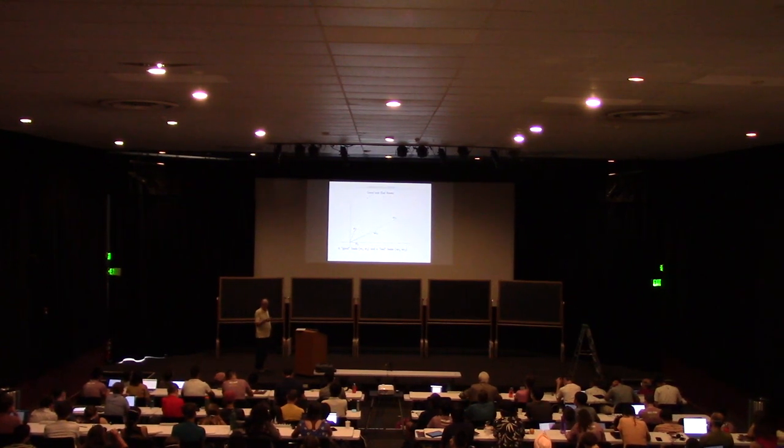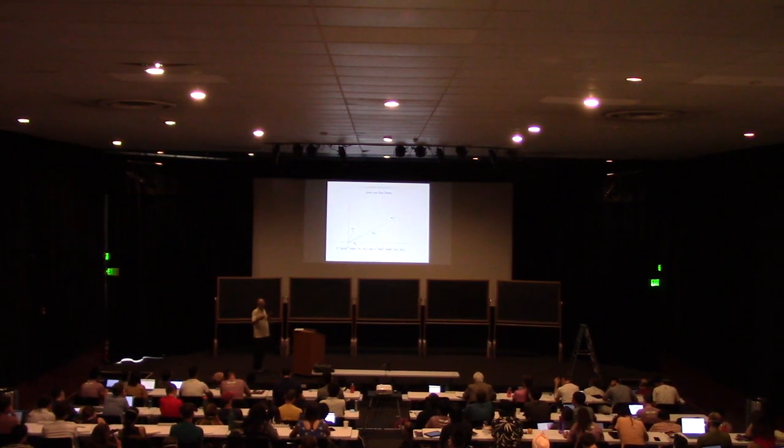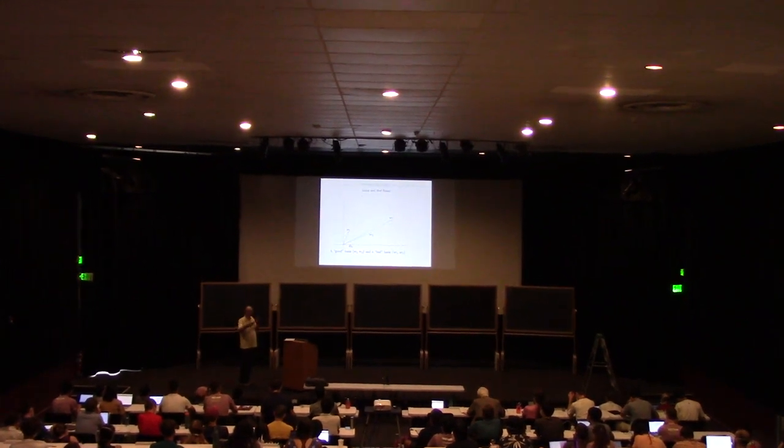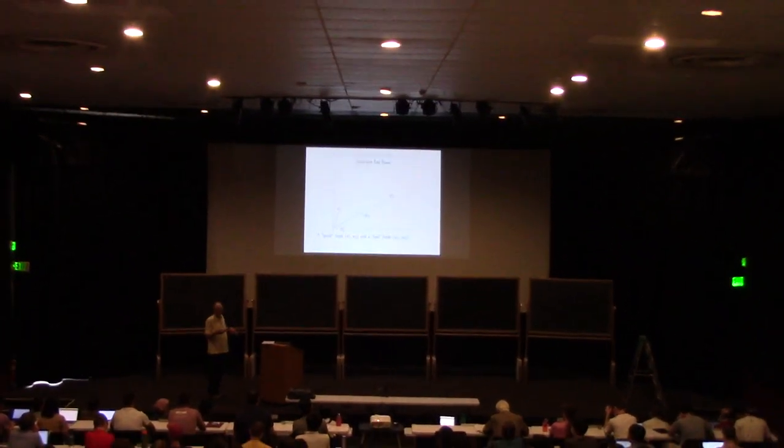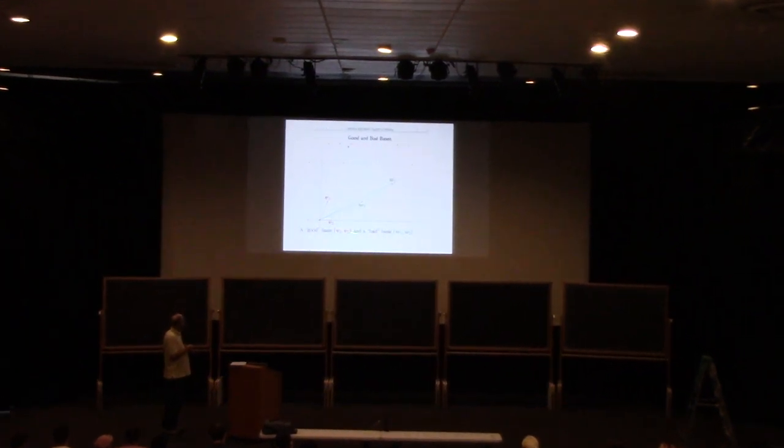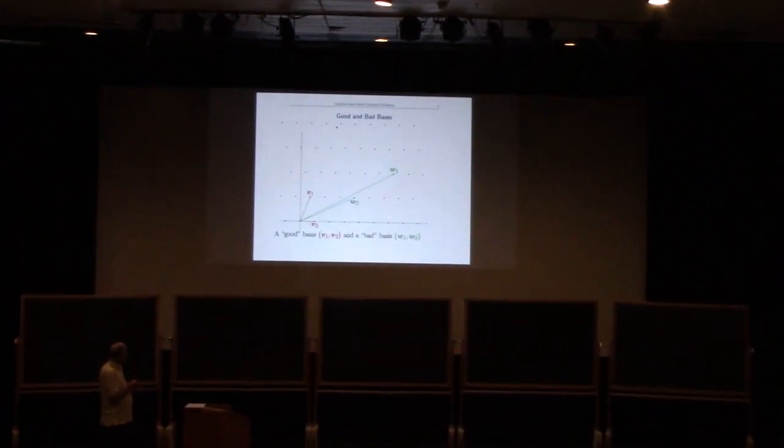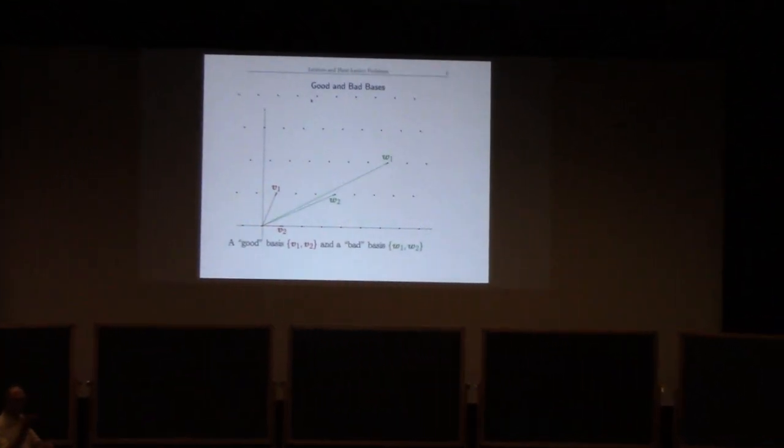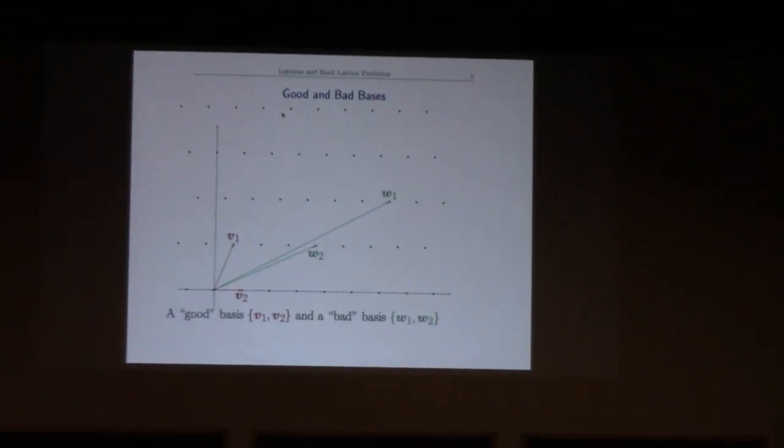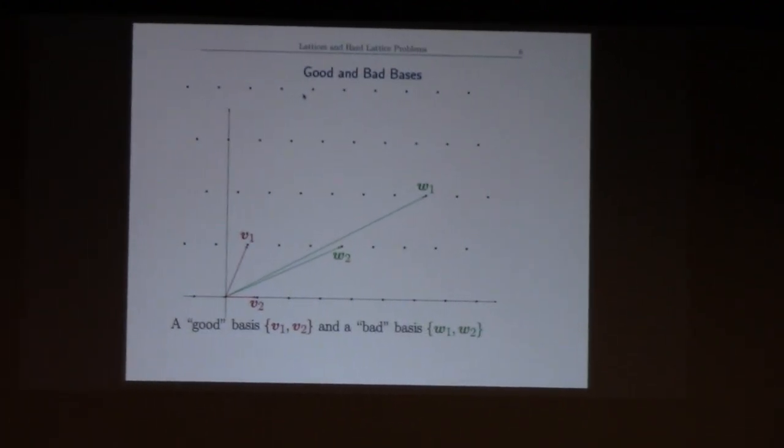Okay, just a change of basis by a two by two matrix with integer coefficients and determinant one to get from one to the other. v1, v2 is a good basis in the sense that it's reasonably orthogonal, and w1, w2 gives you a big skinny fundamental domain.